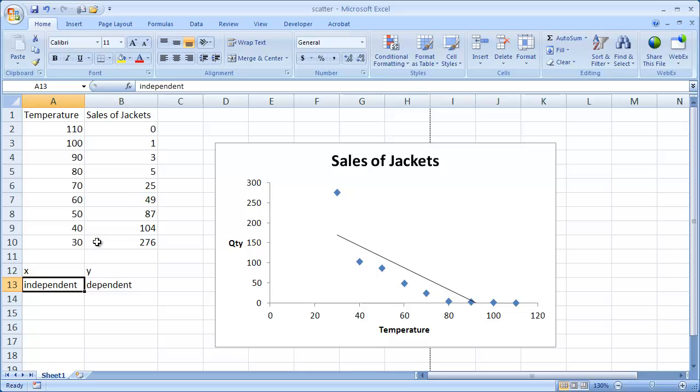So here's a small table of our X variable, or X values, and our Y values. So basically what we're saying here is as the temperature decreases, we are seeing an increase in the sales of jackets.